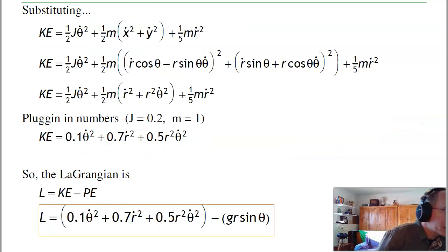The kinetic energy is ½J θ̇² + ½m(ẋ² + ẏ²) + ⅕mṙ². Substituting for x dot and y dot, and squaring these terms, I get cos² + sin² = 1, sin² + cos² = 1. That gives me the r² θ̇² term. ⅕mṙ² is here, and the cross terms cancel out conveniently. So this winds up being the kinetic energy.